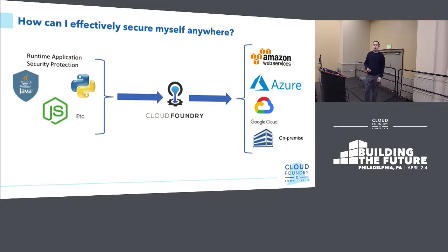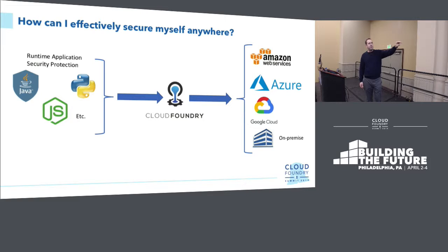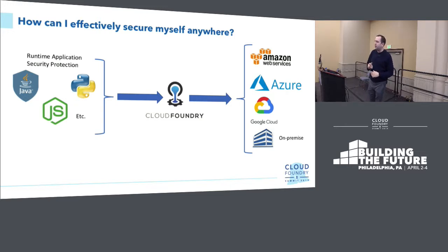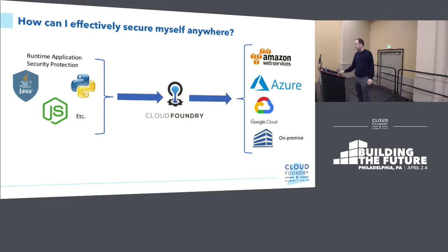How do I effectively secure myself anywhere? I focus on the runtimes — Java, Node, Python — because they're common. If I put them into Cloud Foundry, I can take my application, secure it in a common way, put it into Cloud Foundry, and it really doesn't matter which cloud provider I run it on. I can run it on AWS, Azure, Google, or in my own data center through a hybrid cloud model.